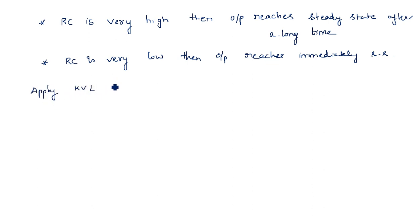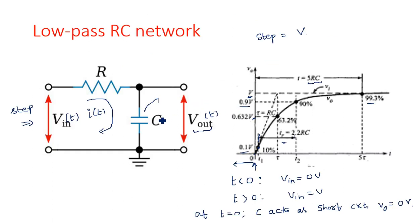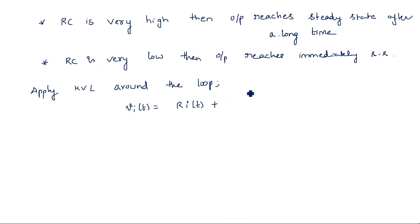Applying KVL around the loop — there is only one loop — the equation is: V_i(t) = R·i(t) + (1/C)∫i(t) dt, where the last term is the voltage across the capacitor.